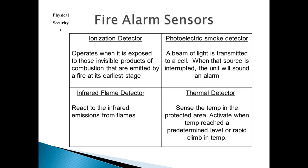We have several sensors to address each one of those stages. The ionization detector operates when it is exposed to those invisible products of combustion. The photoelectric smoke detector — what you've got in your house — a beam of light is transmitted to a cell; when that source is interrupted, the unit will sound an alarm. The infrared flame detector actually picks up the light emissions from flames and will sound the alarm. The thermal detector senses the temperature as it climbs, and when it reaches a predetermined level, will activate and send a signal to the control panel.